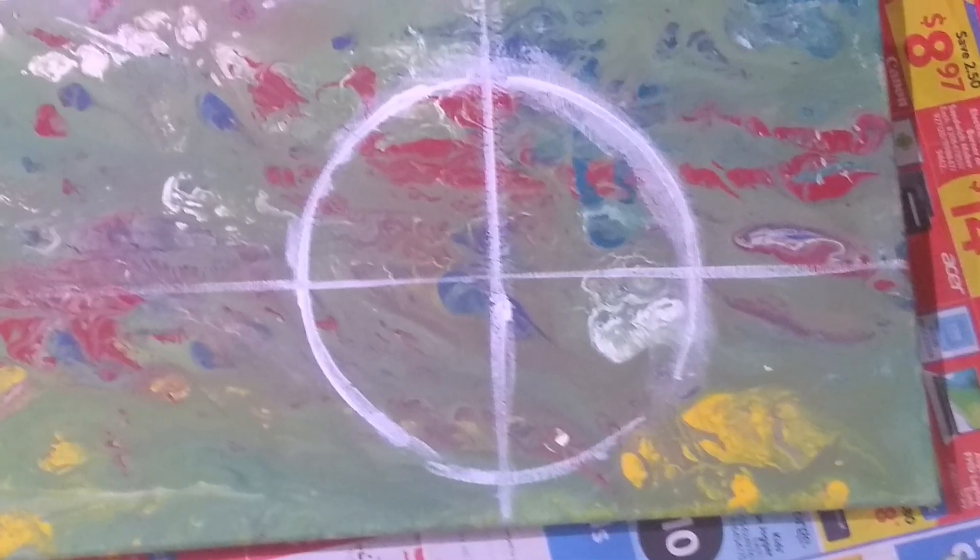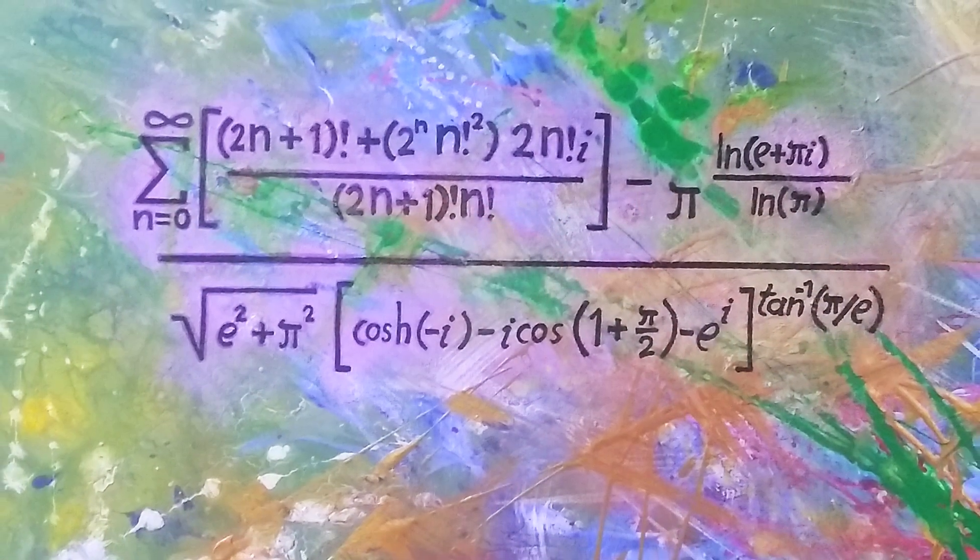Then came the time to add another layer of splatters. I wanted less uniformity but the red felt a little too intense. I finally ended up with a distinct green splash just over the fading unit circle.